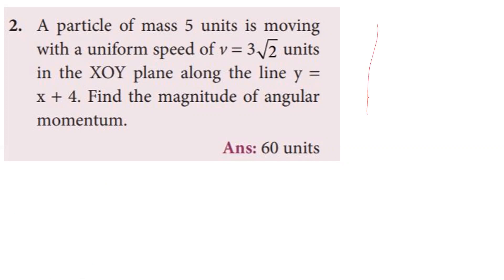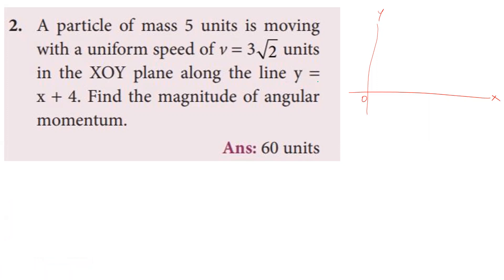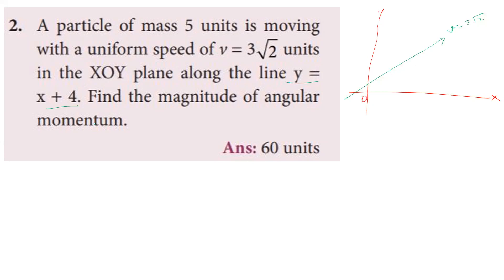Setting up x and y axes with the origin. The particle moves in the direction of the line y = x + 4, which is a straight line. From the equation y = x + 4, the slope equals 1. Since slope = tan θ, and tan θ = 1, we get θ = 45°.